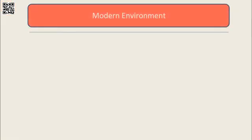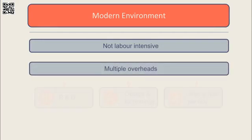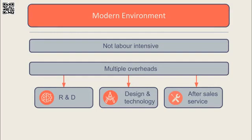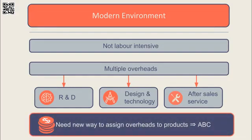In the modern environment, activity-based costing recognises that overheads are no longer driven by manufacturing activities only or the number of units produced. Overheads are incurred as a result of product research and development, design, technology, and after-sales service — all of which focus on improving the quality of the product. Different products consume these company resources in different ways, thus incurring overheads at a different rate. So activity-based costing looks for a new way to trace overheads to products — in other words, a new way to absorb.